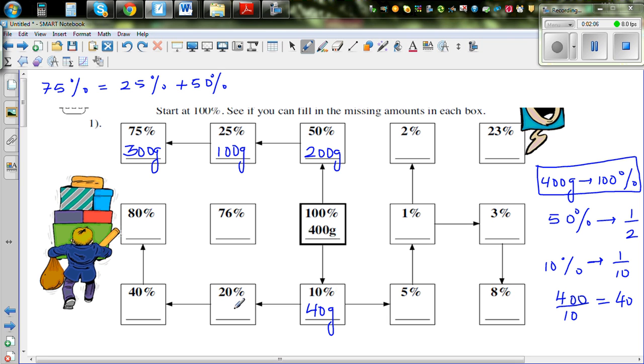From 10% you can find 20%, which is 80 grams. Double of 10% is 20%, and 40% is double of 20%, so it's 160. And 80% is double of 40%, so this is double of 160, which is 320 grams.